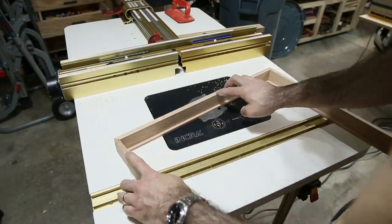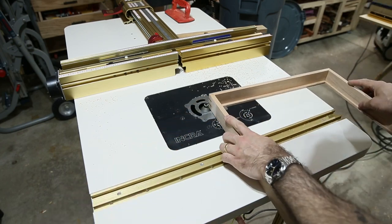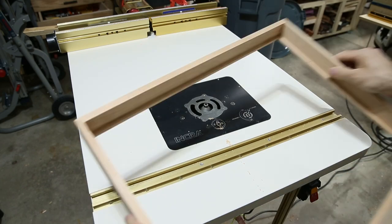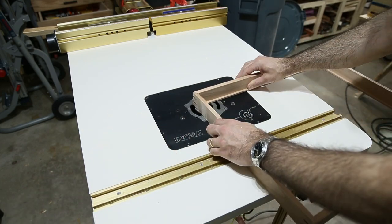I'll bring it back over to the router table to add a chamfer on the outside and also on the inside. I think that looks pretty nice. Note the change of directions when you go to an interior.